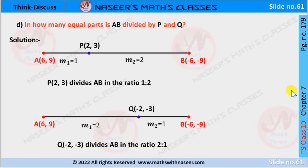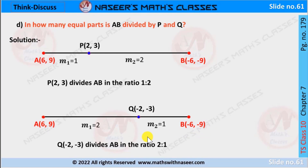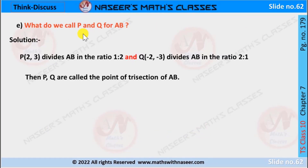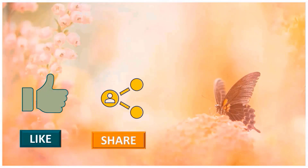Think and Discuss, page 179, Chapter 7, Coordinate Geometry. In how many equal parts is AB divided by P and Q? From the above we can say that point P(2,3) divided A(6,9) and B(−6,−9) in ratio 1:2, and point Q(−2,−3) divided AB in ratio 2:1. Therefore P and Q are called the trisection points of AB. Please like, share, and subscribe to our channel for latest updates by pressing the bell icon.